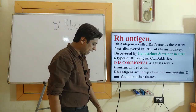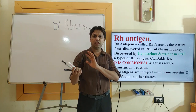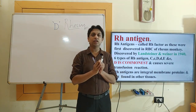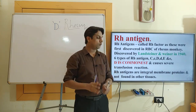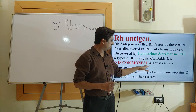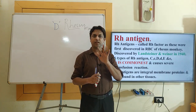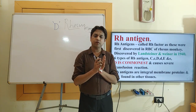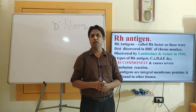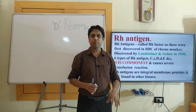Since D is the commonest antigen, when there is incompatibility—when this antigen combines with its corresponding antibody—it leads to severe transfusion reactions. Unlike the ABO blood grouping system, the RH antigen is not present on other tissues. A and B antigens are found in salivary glands, pancreas, and amniotic fluid, but RH antigens are present only on RBCs as integral membrane proteins.